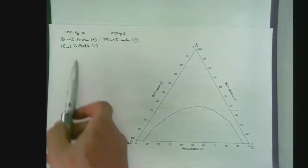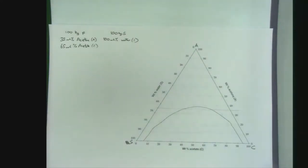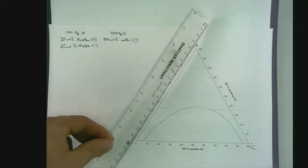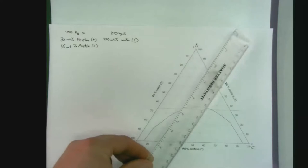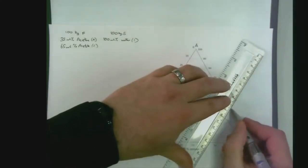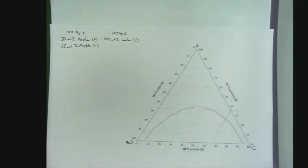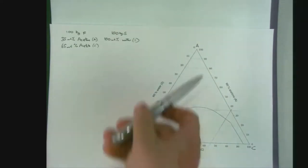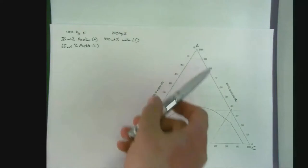We've also been told that it's 65 percent weight acetate. Again, acetate is in this corner. This is our zero line: 10, 20, 30, 40, 50, 60, 65 lies on this line. If we did a quick maths check, 35 percent and 65 percent add to 100, therefore we wouldn't expect any water. So we'd expect the point to be on this line anyway.